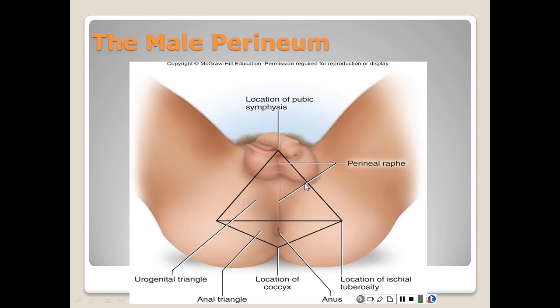The left testis is usually lower than the right so that the two are not compressed against each other between the thighs. Posteriorly, the scrotum contains the spermatic cord and a bundle of fibrous connective tissue containing the ductus deferens, blood and lymphatic vessels, and testicular nerves — four things the scrotum contains posteriorly.